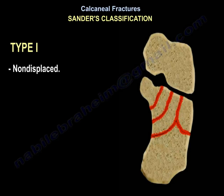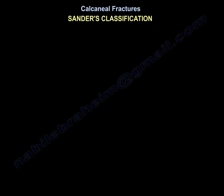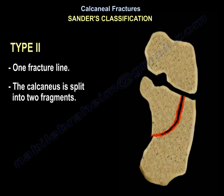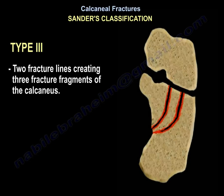There are several types. Type one is a non-displaced fracture. Type two has one fracture line — one fracture line splits the calcaneus into two fragments.